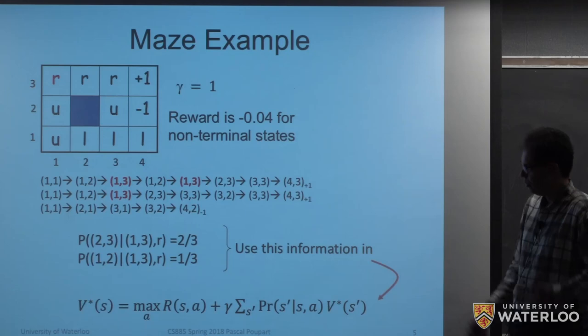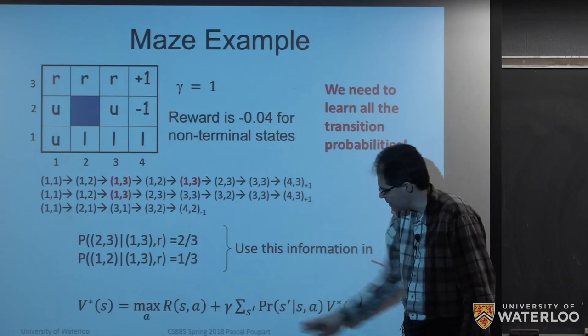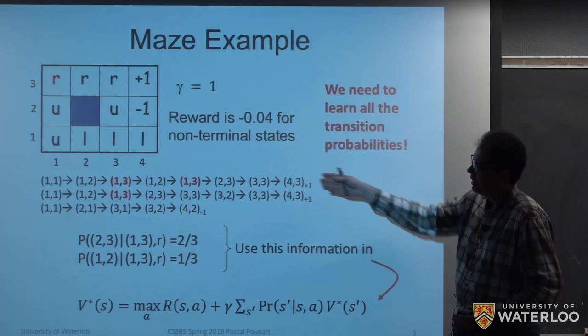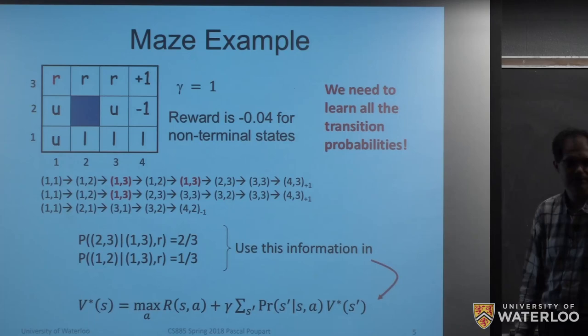So the idea is: if the problem is that we're missing some information — like we don't have a transition model — maybe we can just estimate that missing information. We could simply start executing some policy, observe some transitions, estimate the transition probabilities, and then optimize our policy based on that.